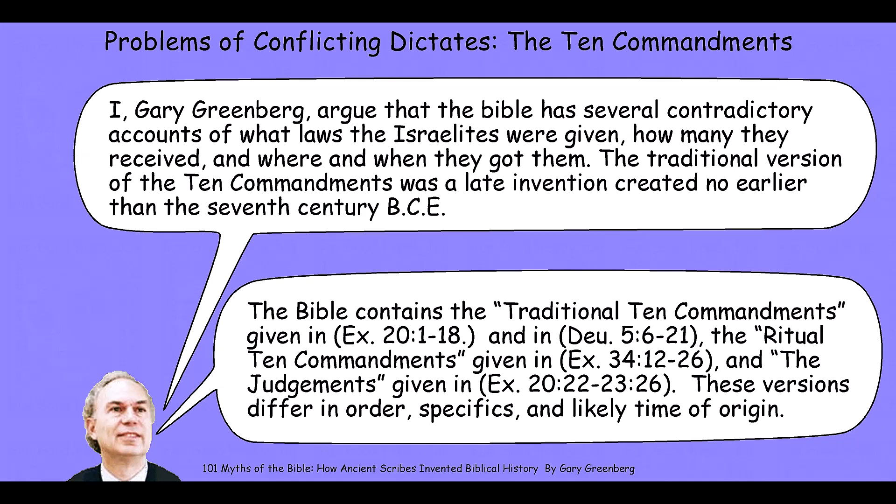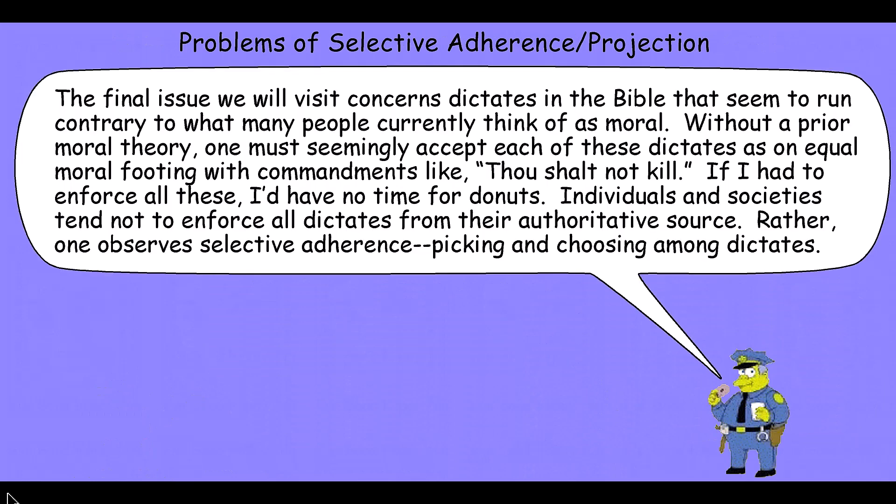Now, you might say the Old Testament is the Old Covenant, and the New Testament is the New Covenant, so what it says in the New Testament is what's really important. Or you might say we accept the traditional Ten Commandments, and these other commandments we don't recognize. And this brings us to our third and final interpretive problem. It concerns dictates in the Bible that seem to run contrary to what many people currently think of as moral. Without a prior moral theory, one will seemingly accept each and every one of these dictates as on equal footing with commandments like 'thou shalt not kill.'